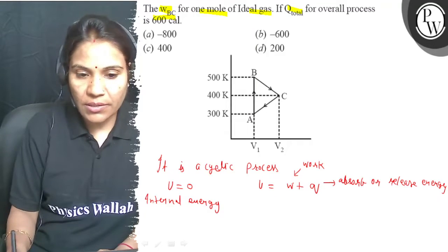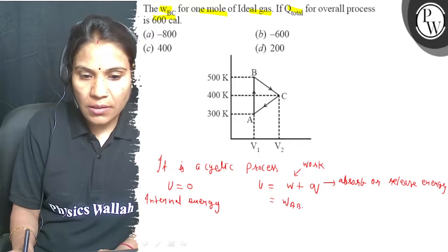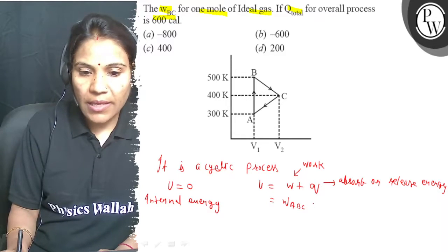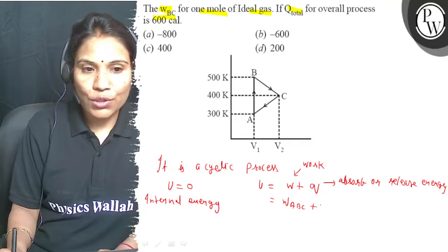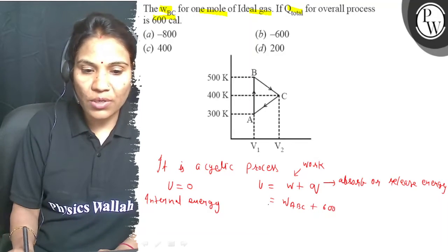Using this equation, W ABC and the value of Q is given 600 calories.